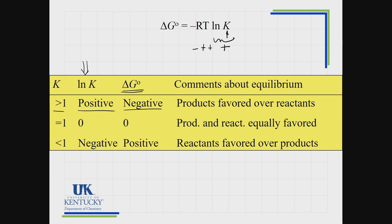The last scenario: if K is small — when K is small, reactants are favored over products. Products over reactants means you have a lot more reactants. If K is less than 1, the natural log of K is negative. Temperature and R are both positive, then we change the sign and delta G ends up positive. A positive standard delta G means reactants are favored over products. They're all tied together.